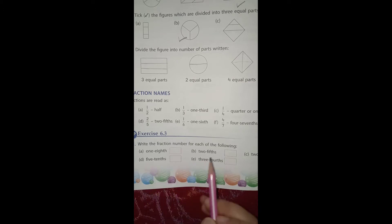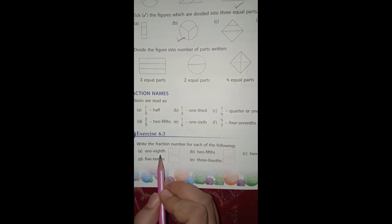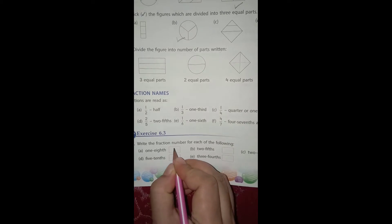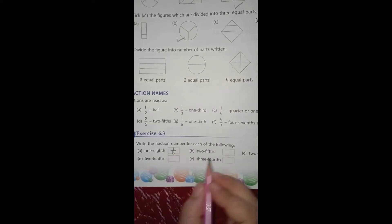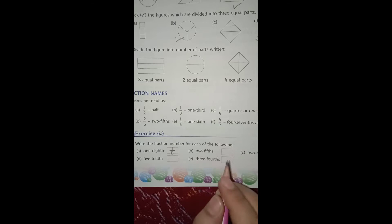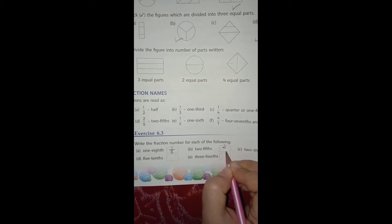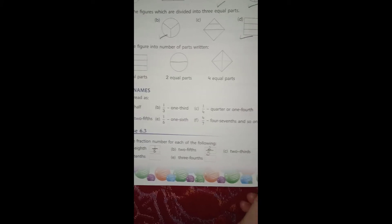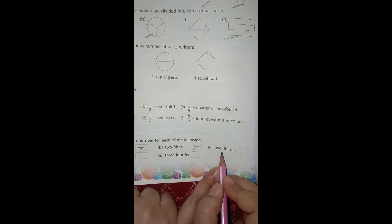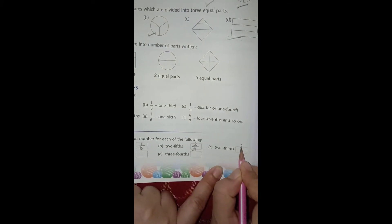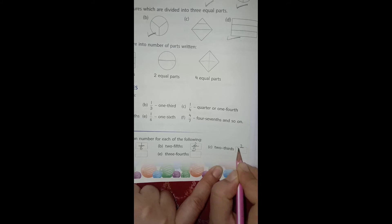Like first one is one-eighth. One-eighth means 1/8. Then part B, two-fifths: 2 will be written as the numerator and 5 as the denominator. Part C, two-thirds: 2 as the numerator and 3 as the denominator.